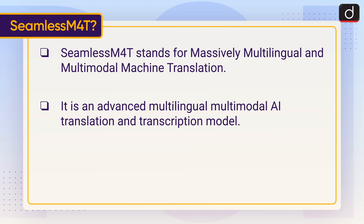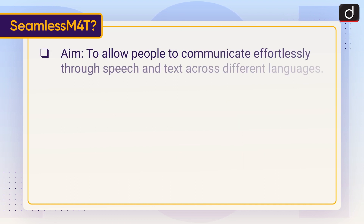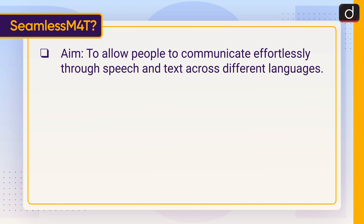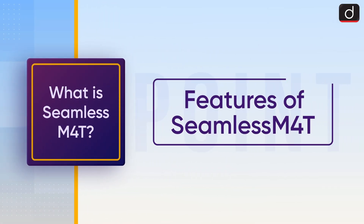It is an advanced multilingual multi-modal AI translation and transcription model developed by Meta, the technology company formerly known as Facebook. The aim of Seamless M4T is to allow people to communicate effortlessly through speech and text across different languages. Let us now discuss the features of Seamless M4T.